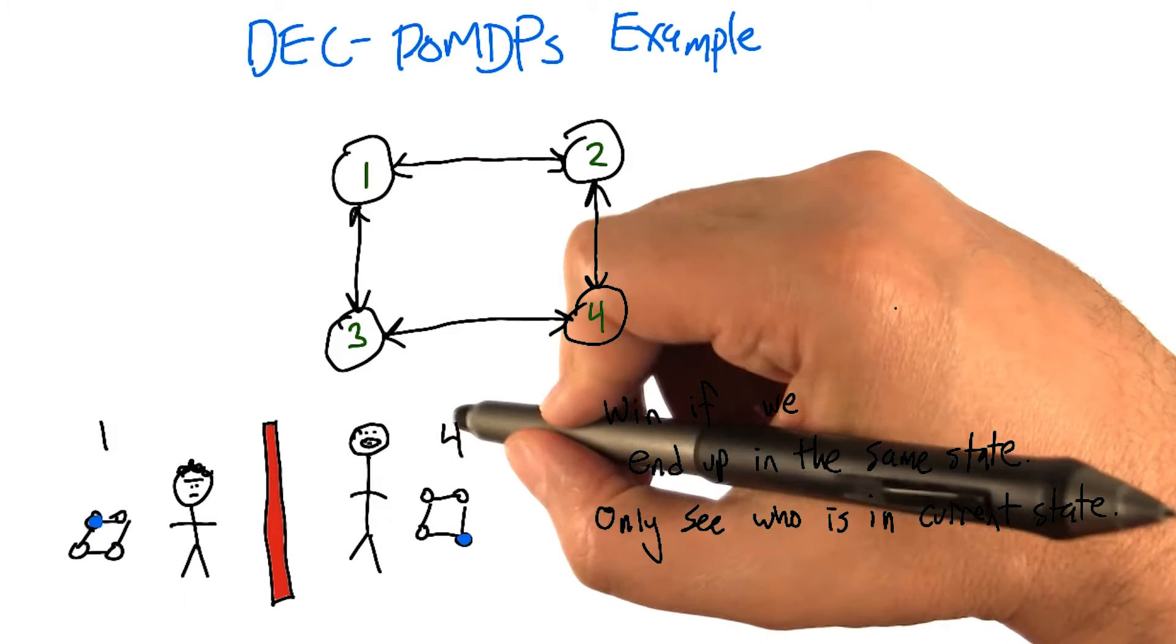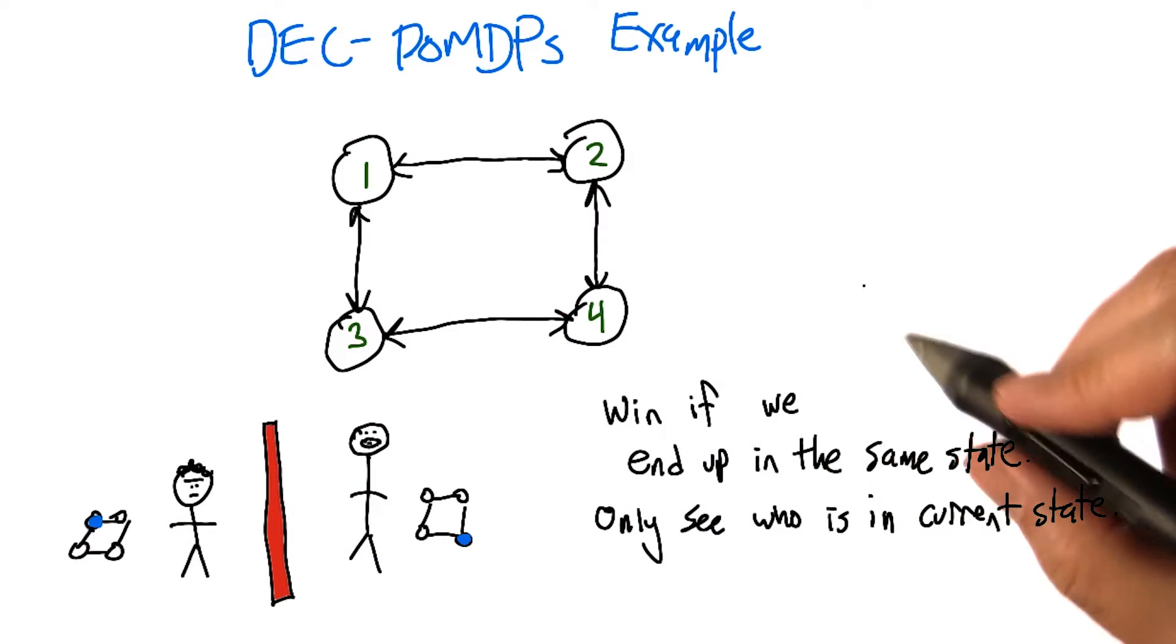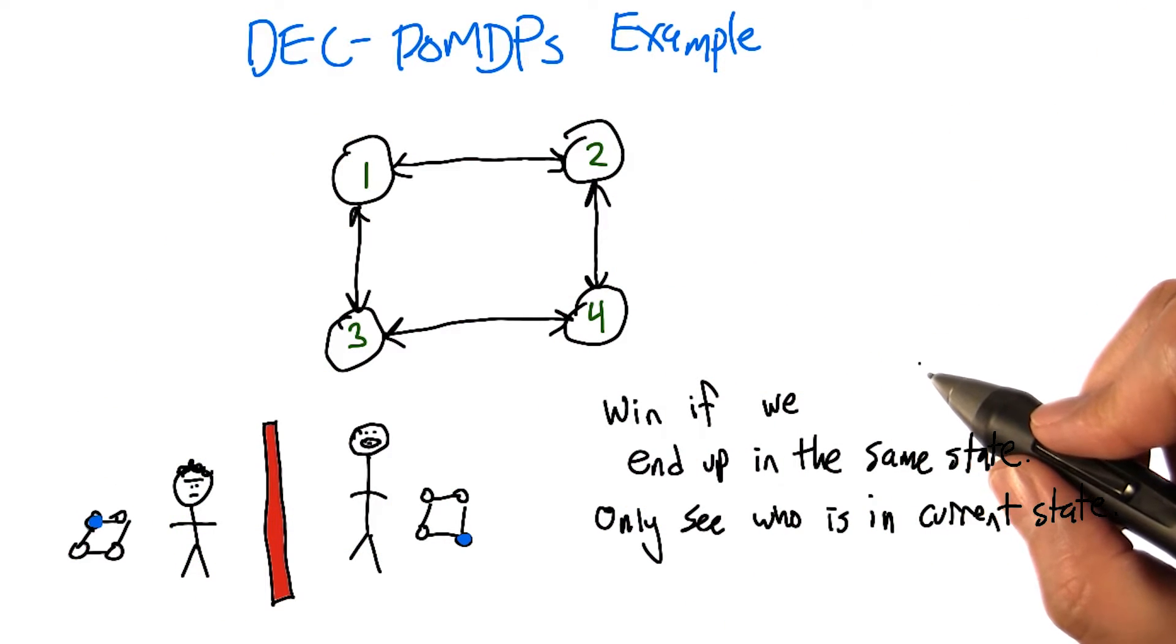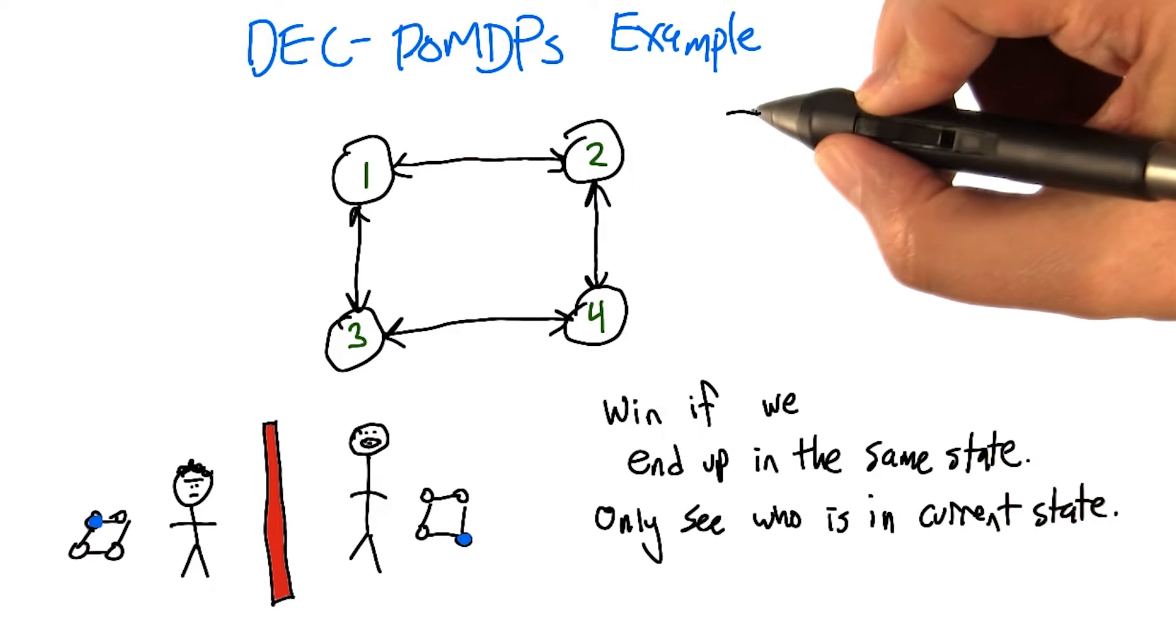Oh, so we can talk about what our strategy would be. Well, I can think of sort of three classes of strategies. So one would be one of us decides never to move, so let the other person move around. That way we can't just miss each other, right?